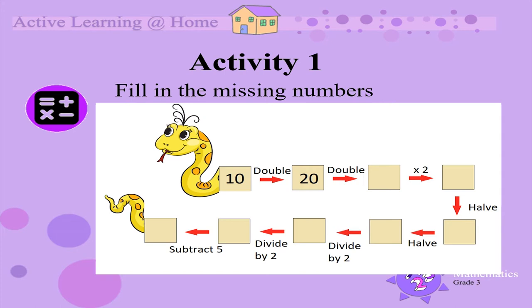Double 20 is 40. 40 times 2 is 80. Half of 80 is 40.